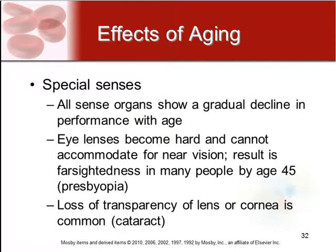Our sense organs all slowly and gradually decline as we age. The lenses in our eyes become harder and can no longer accommodate for near vision — this is what results in the farsightedness of many older adults. There is also a loss of transparency of the lens or cornea, which is called cataract.